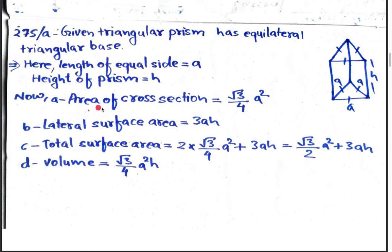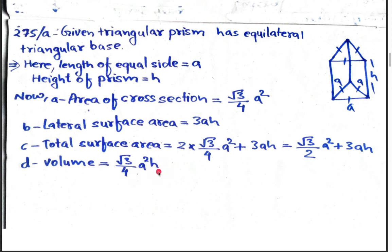The length of the equal side is a and the height of the prism is h. Using the formulas: area of cross-section = (√3/4)a², lateral surface area = 3ah, total surface area = 2 × (√3/4)a² + 3ah = (√3/2)a² + 3ah, and volume = (√3/4)a²h. These formulas are used to find everything related to this prism.